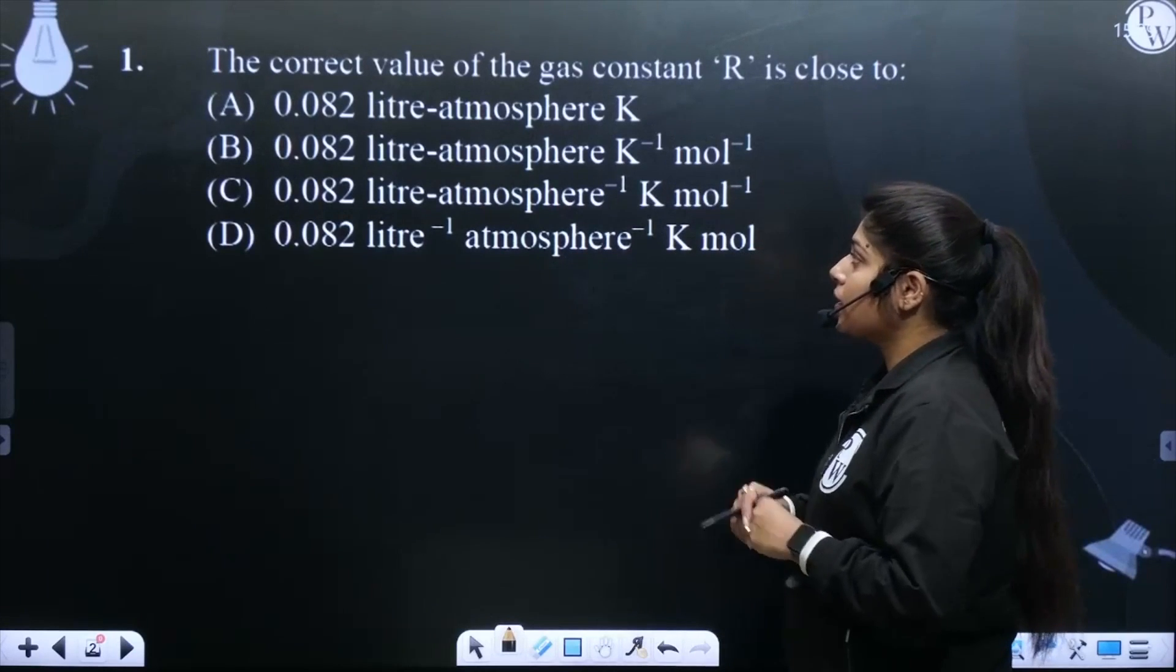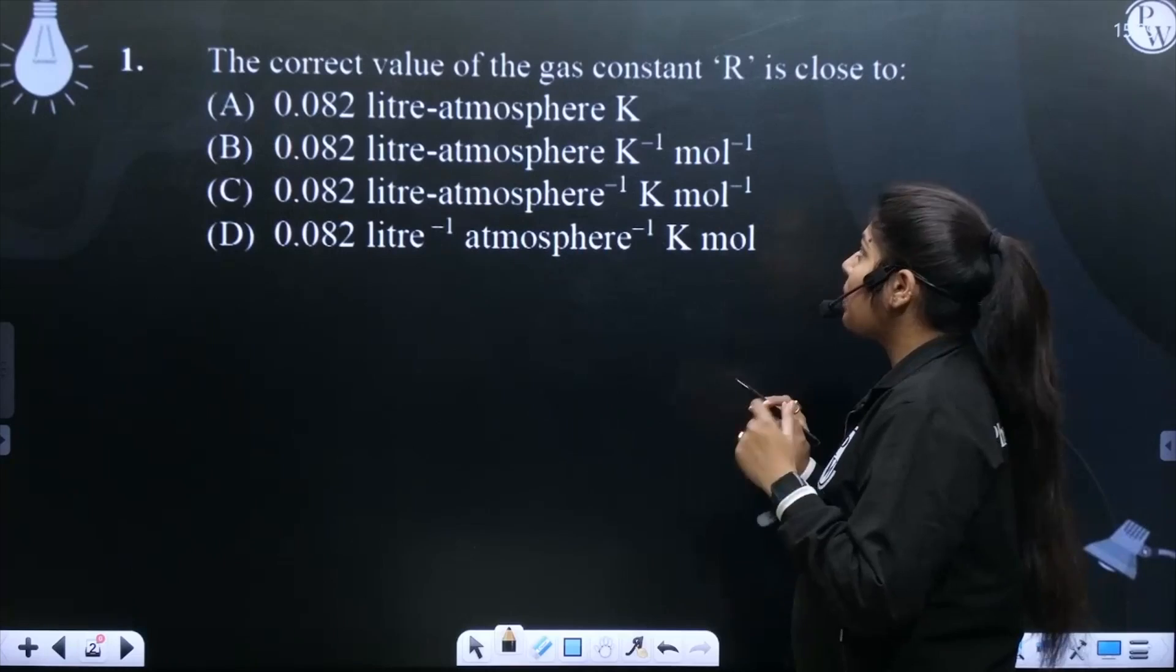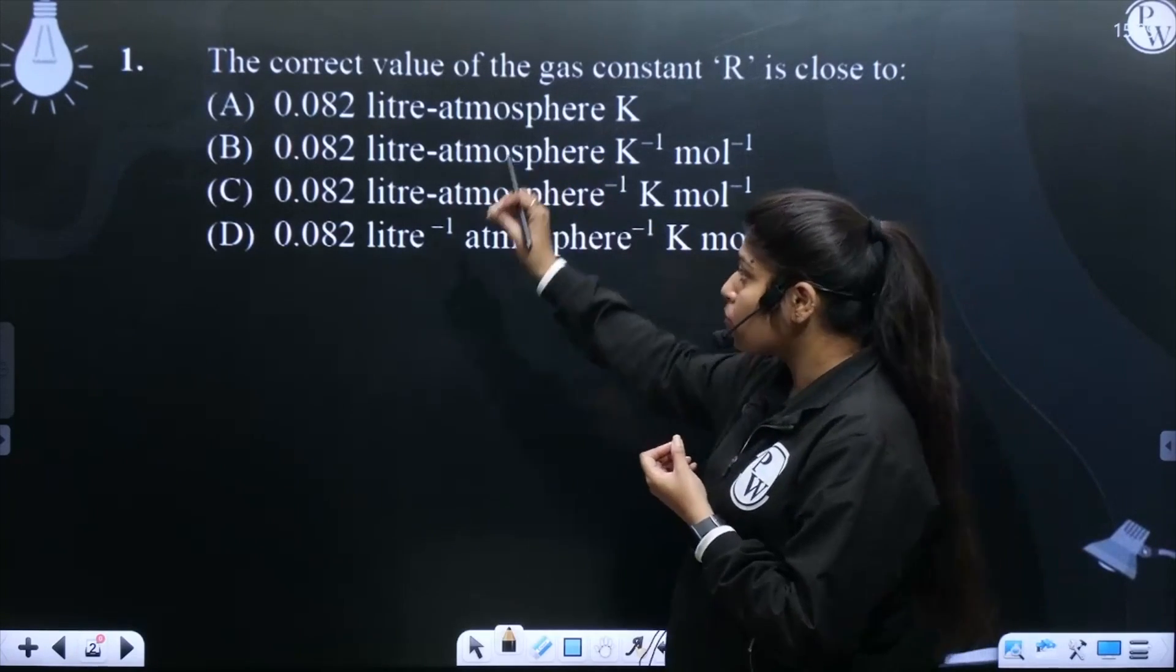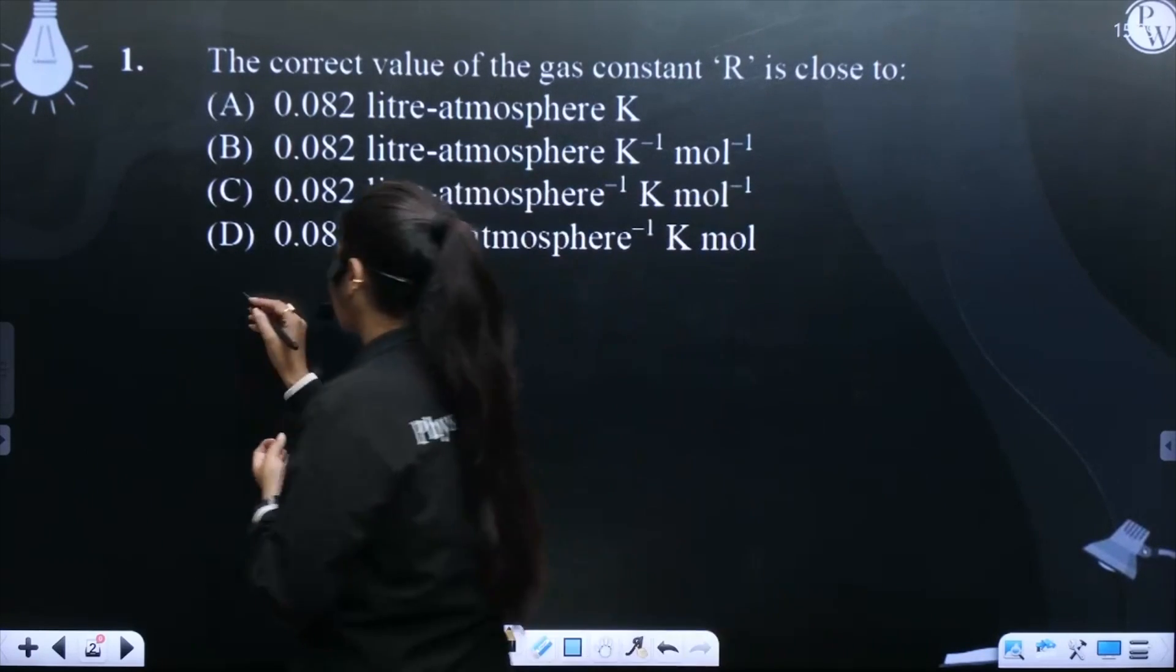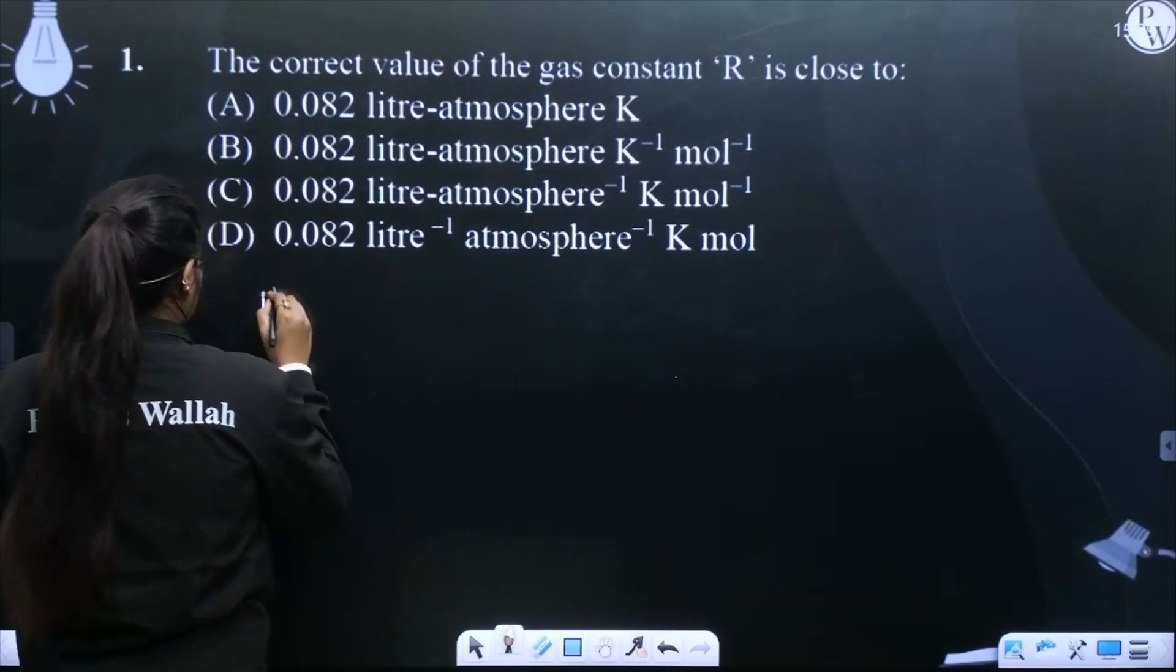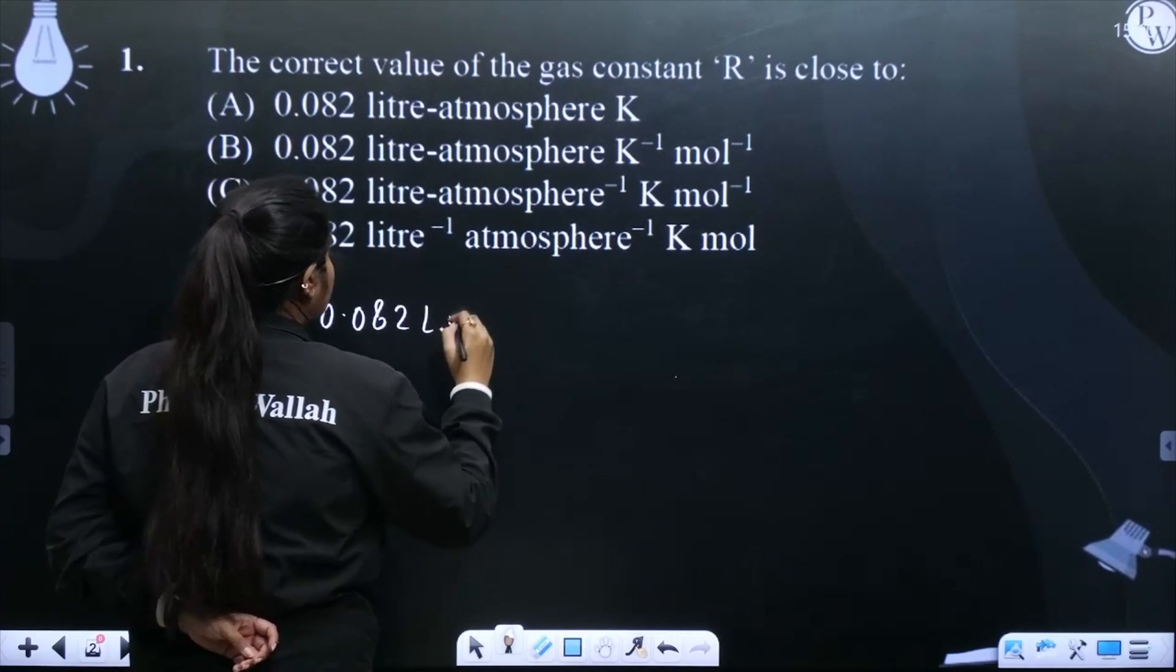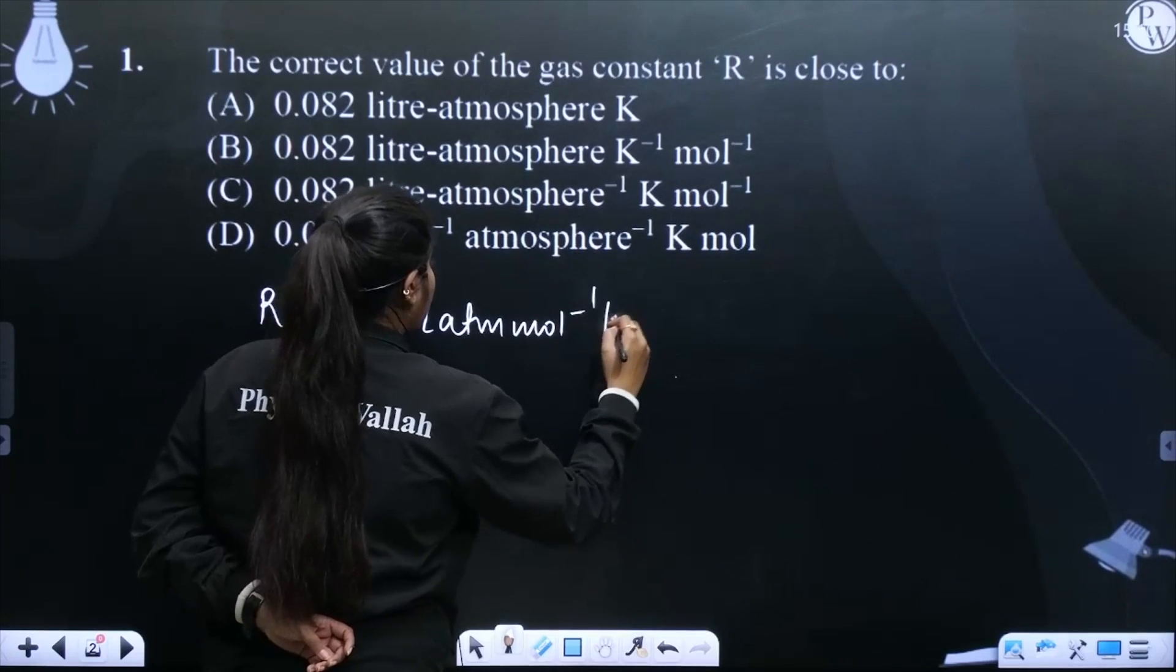According to the first question, the correct value of the gas constant R is close to - here we're asked about the gas constant R values. The values given are the same, but what's different are the units. So we know that R is basically 0.082 liter atm per mole per kelvin.